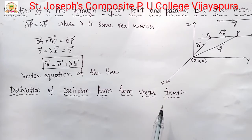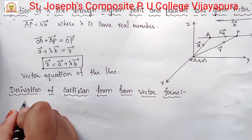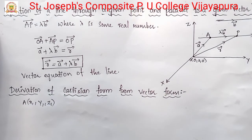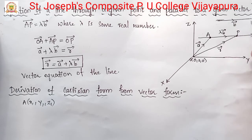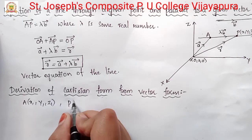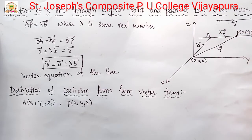Now for the Cartesian form: let the coordinates of the given point A be x1, y1, z1, and the direction ratios of the line b be a, b, c. Let the coordinates of any point P be x, y, z. Then r vector equals xi + yj + zk, position vector of A equals x1·i + y1·j + z1·k, and vector b equals a·i + b·j + c·k.